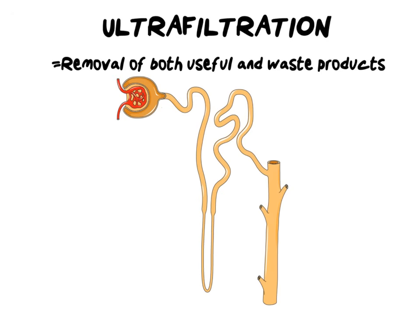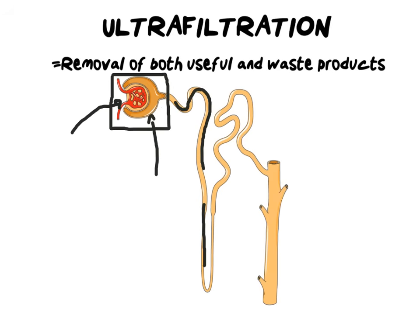In ultrafiltration, we actually do both at the same time. Now, it's important to identify the location of ultrafiltration before we go any further. Ultrafiltration specifically occurs at the beginning of our nephron in a structure called the Malpighian body. It is made up of two components: the glomerulus, which is a capillary network, and the Bowman's capsule. Together, they filter your blood, taking out useful and waste products to create a substance called filtrate — a liquid that then makes its way down the whole length of the nephron. As we'll learn in follow-up videos, different sections of the nephron will absorb or exchange useful and waste products as we go along.